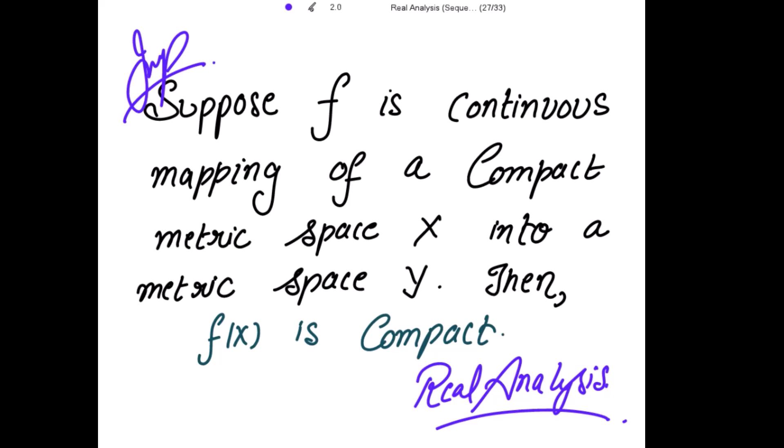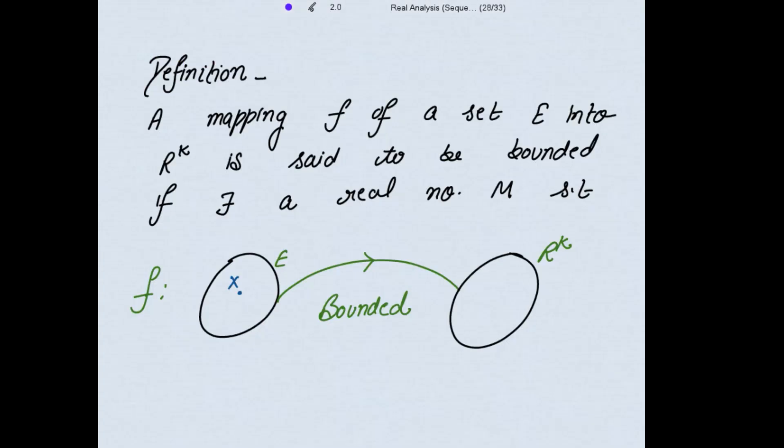f(X) is compact if we can show that for any open cover of f(X) there exists a finite subcover also for f(X). Before starting the proof, let's read this definition.